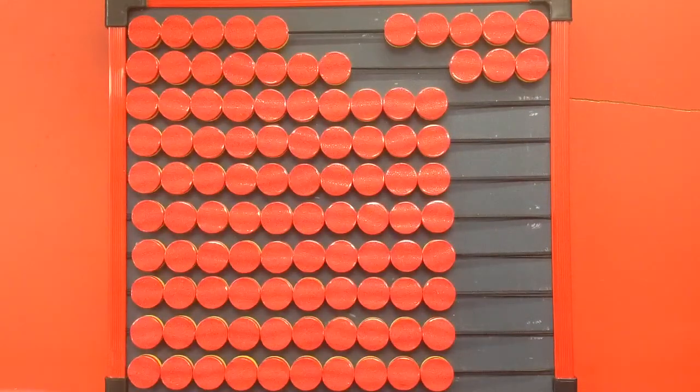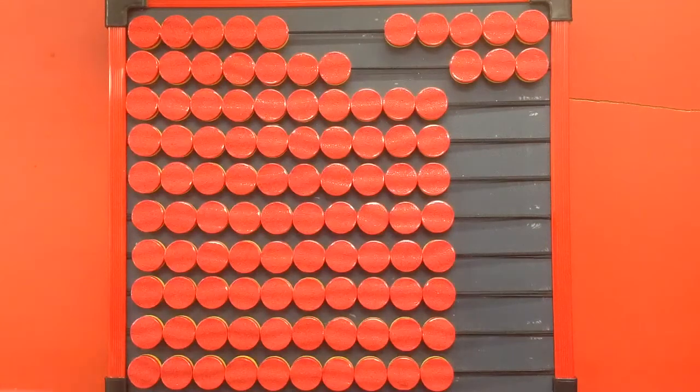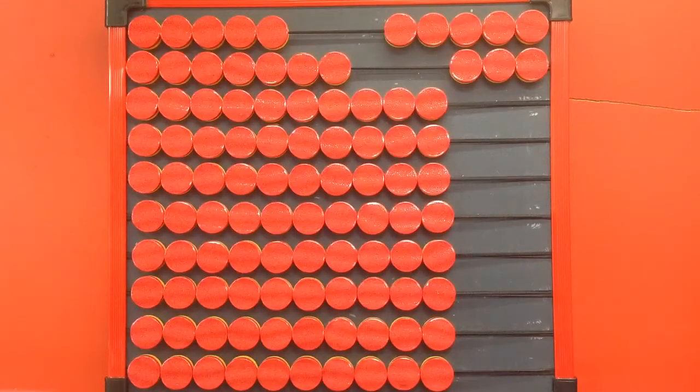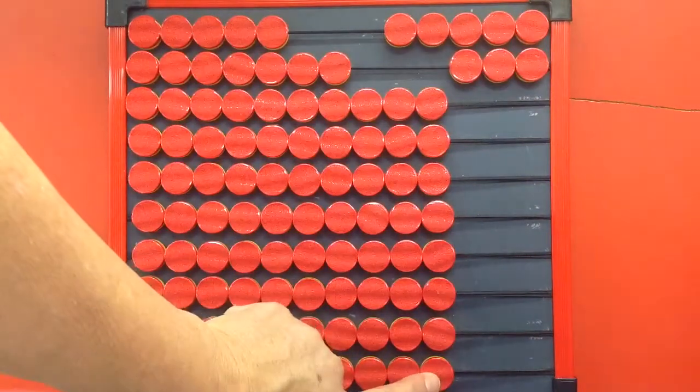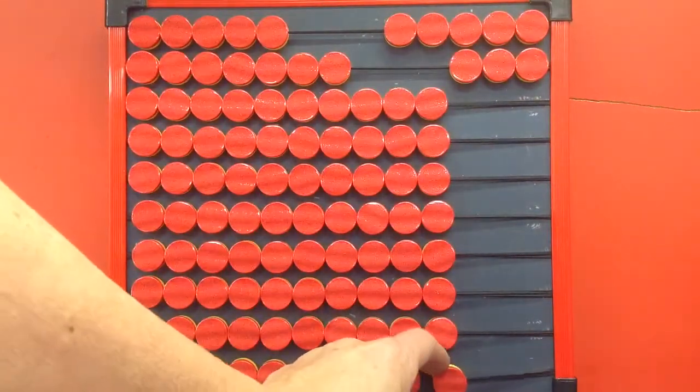Each time that we divide 8 into 35, or whatever number is remaining, we will turn one bead at the bottom yellow and move it over. Okay, let's begin.